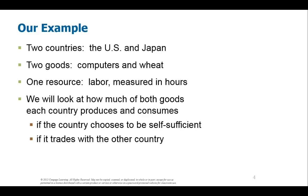In this lecture's example, we will use two countries — though it could have just as easily been two individuals, as your textbook uses. Our example for this lecture is the countries of the United States and Japan. We are going to look at two goods: computers and wheat, and we only have one resource, which is labor. Those are our givens.